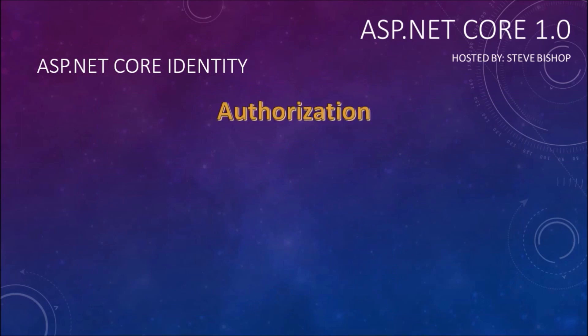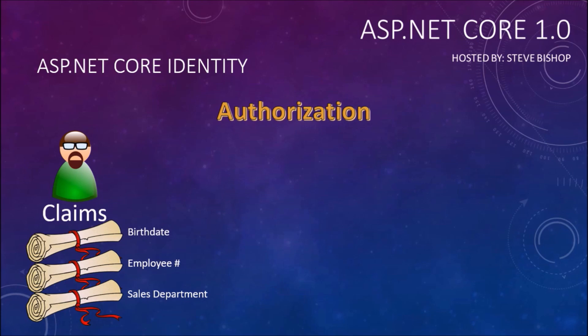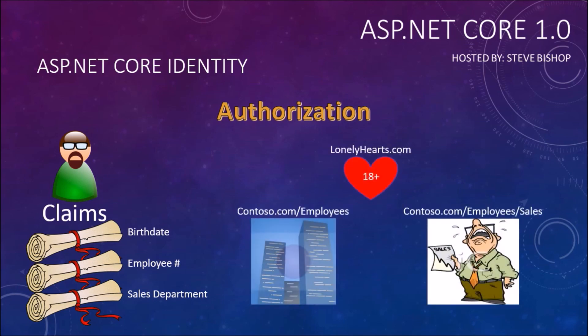Now let's talk about authorization. Say your user has been properly authenticated and now they have a series of claims — perhaps a birthday claim, an employee number claim, and a sales department claim. Why would they need each one of these claims? It entirely depends upon where that user is trying to go. If they're trying to go to a website that's only supposed to be 18 years or older, you should be checking their birth date claim to make sure that they are 18 years or older.